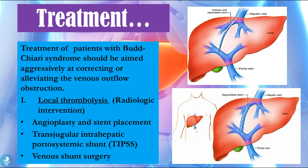Local thrombolysis through radiologic intervention can be done by angioplasty with stent placement, transjugular intrahepatic portosystemic shunts (TIPS), or venous shunt surgery. These more invasive approaches involve the placement of a shunt or a new route for the blood to flow through, alleviating the outflow obstruction and proving to be much more successful in terms of long-term benefit to the patient.